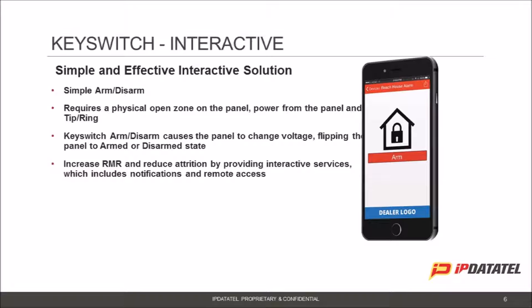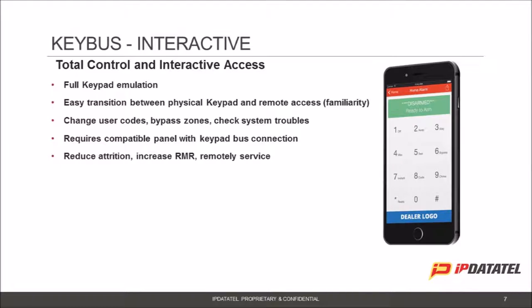Now let's move on to KeyBus technology and the benefits of full interactive. KeyBus connectivity is really robust — basically full keypad emulation for DSC, Honeywell, and GE. This device provides a consistent experience for the consumer from their keypad on the wall all the way to the app and the website. It allows you to increase your customer scores by being able to remotely service these accounts. You can go in and change user codes, bypass zones, check system troubles, and also remotely service through uploading and downloading the panel or using the online keypad to solve issues instead of rolling a truck.